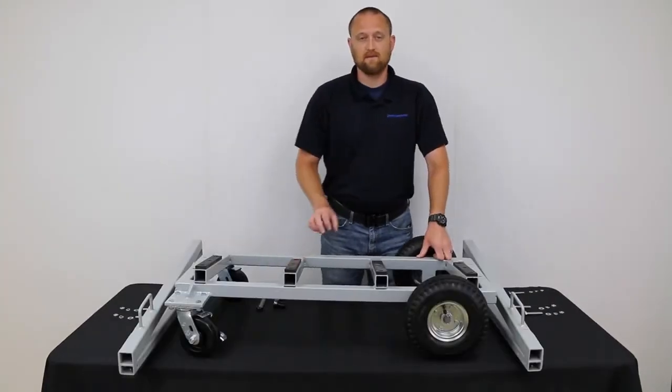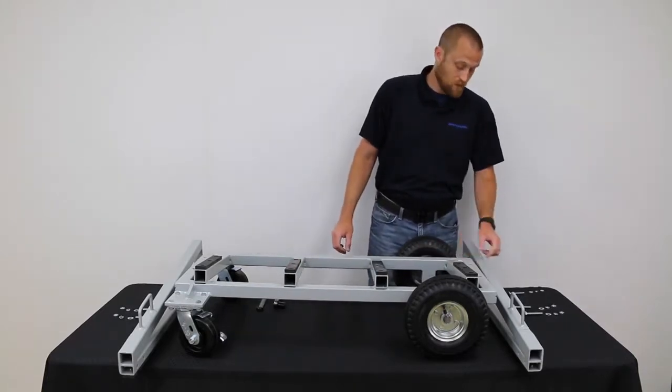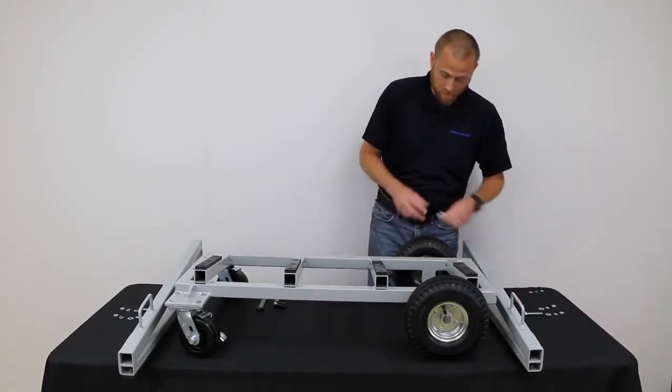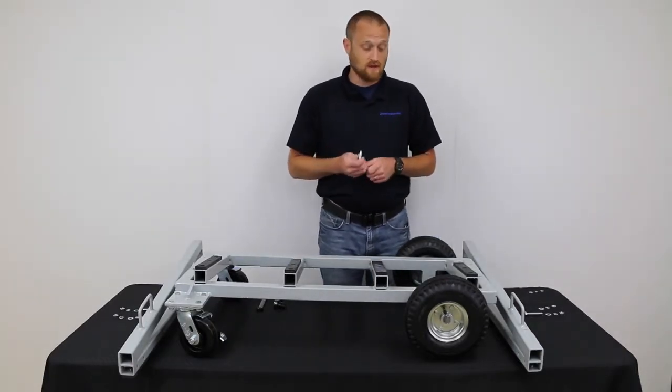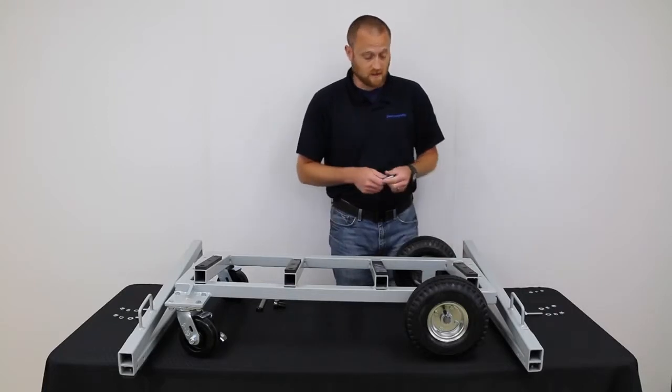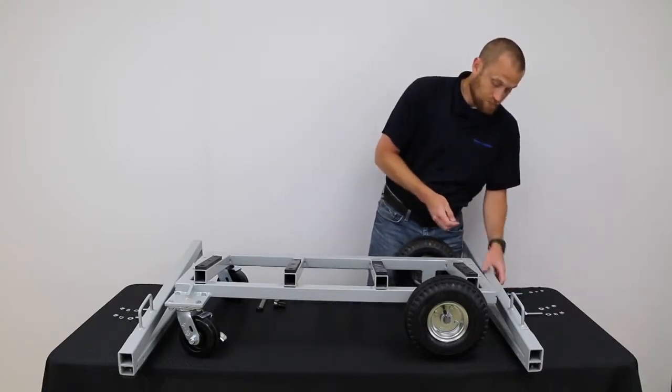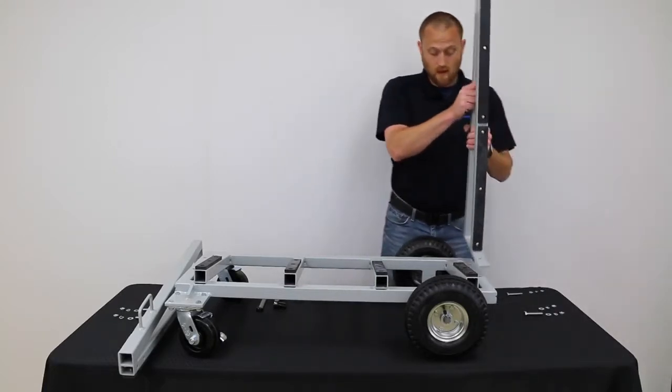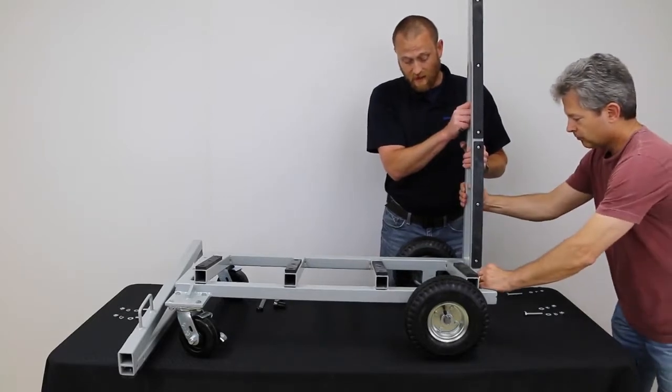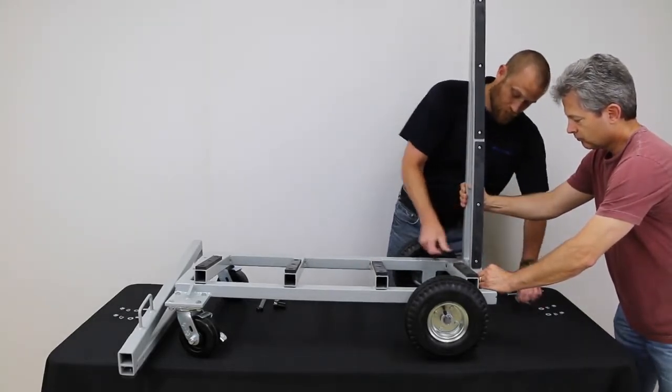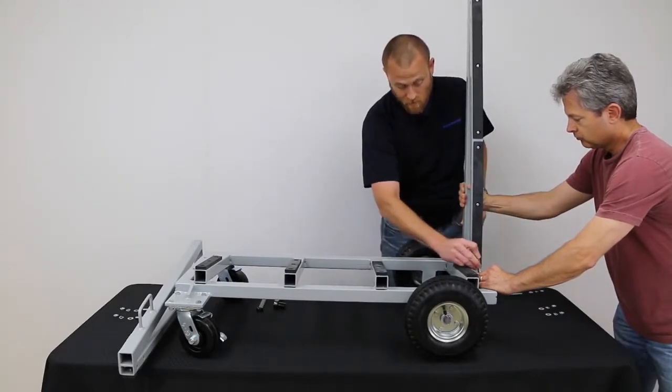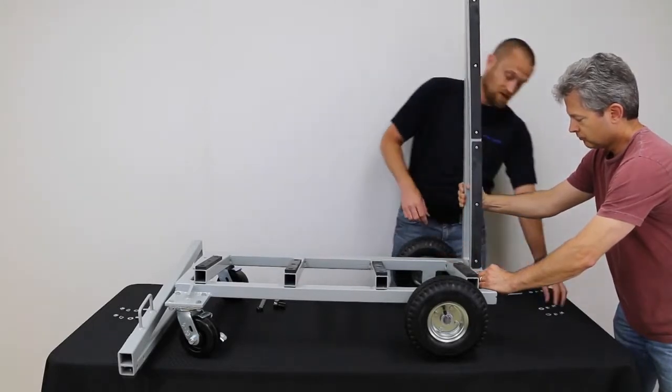The next step in the assembly process, we're going to attach the uprights to the base. When you open up your hardware package, you'll notice that there's two different sized bolts. The larger of the two is what we're going to use to attach the uprights to the base. Begin by setting the upright on the base and aligning the pre-drilled holes. Run the bolts through the top of the upright all the way through to the bottom of the base.